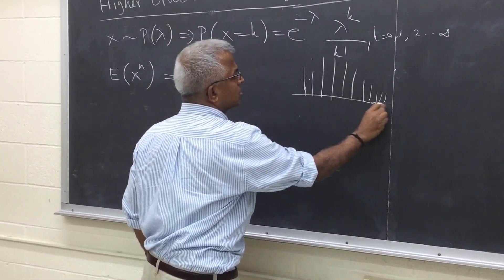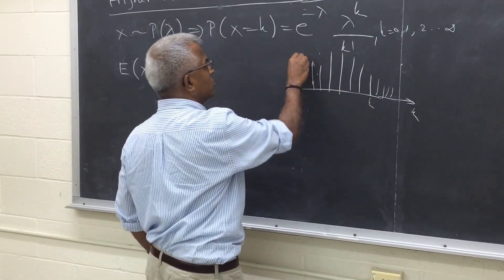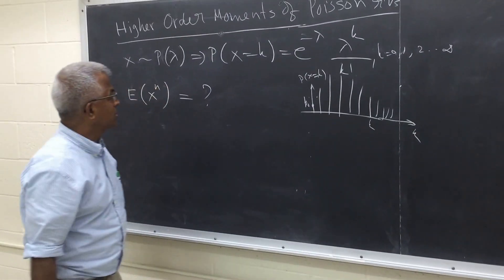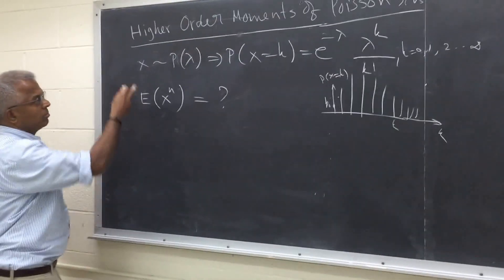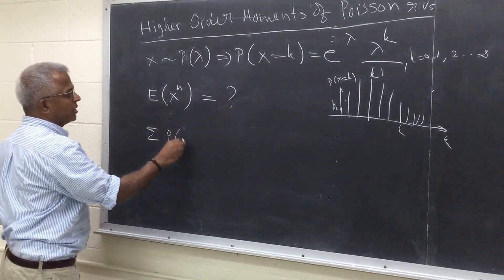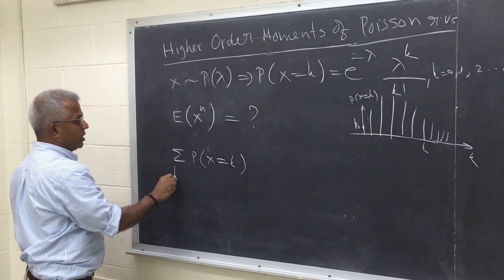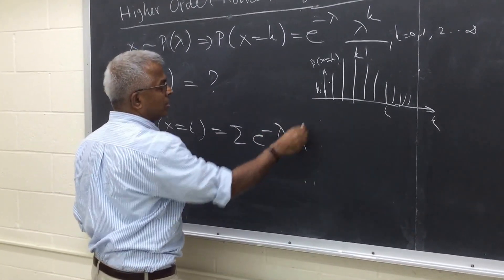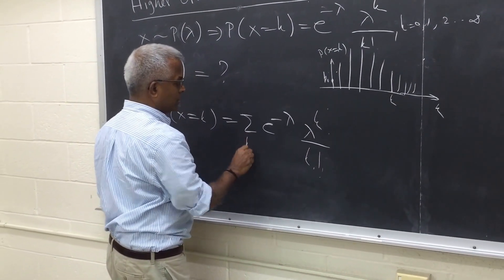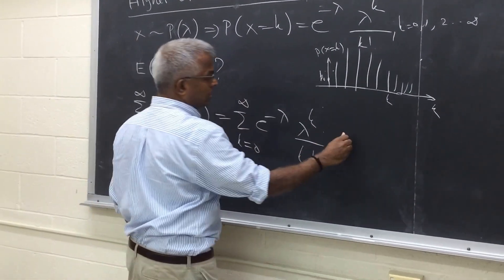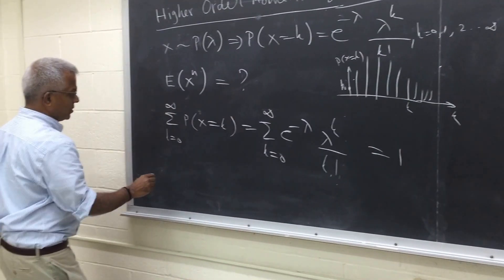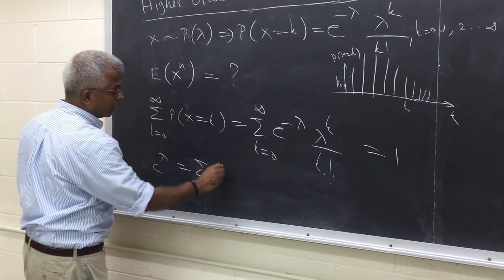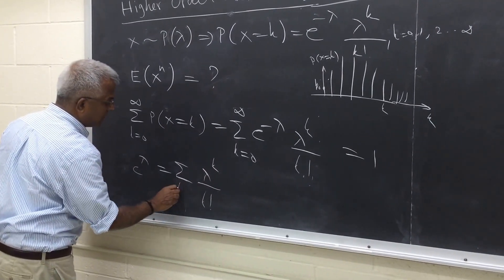The probability of X equal to k, summed from k equal to 0 to infinity — that is e raised to minus lambda times lambda k over k factorial — equals 1. So we get the identity that e raised to lambda equals the sum of lambda k over k factorial. This is an identity.